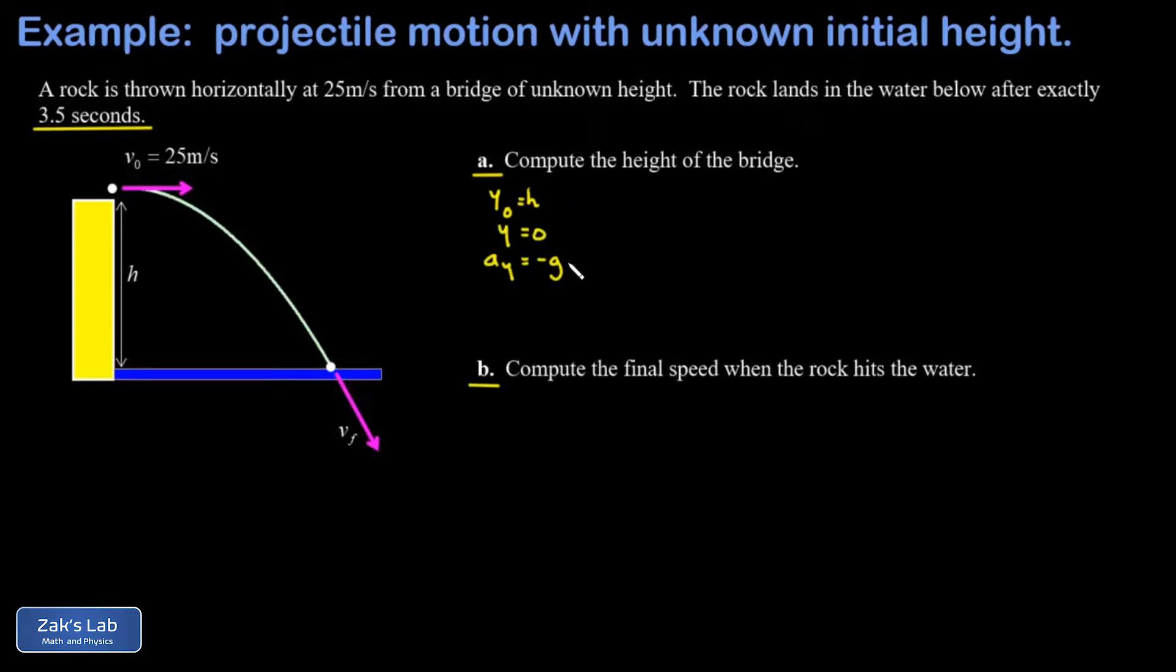The final height is zero. The Y acceleration is just negative G because we have free fall near the surface of the earth. Initial Y velocity is zero. The final Y velocity we're interested in in part B. And then the time for this fall is 3.5 seconds.